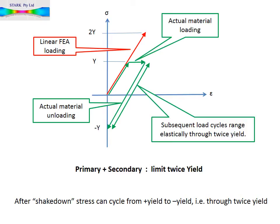The primary plus secondary limit of twice yield warrants consideration with respect to the underlying strength target. While the stress at the discontinuity in the linear analysis can reach twice yield, the actual material will of course yield on first loading. However, when unloaded, and the two shell components regain their original shape, the joint will be forced back to close to its original geometry. So when unloaded after first loading, this region will have inbuilt residual stress that can be as much as negative yield. Subsequent load cycles will fluctuate in stress within the range minus yield to plus yield, i.e. elastically through the range of up to twice yield. This process is called shakedown. The strength objective is clear: after shakedown, stress in the discontinuity region as a result of the design pressure should cycle elastically within a range of up to twice yield.